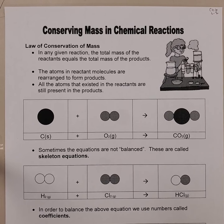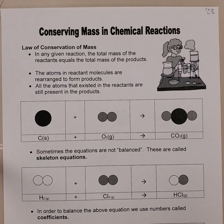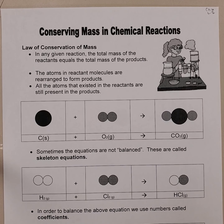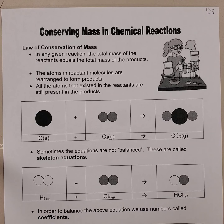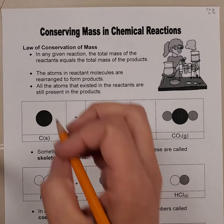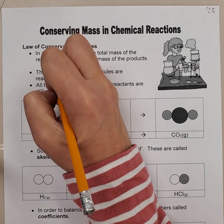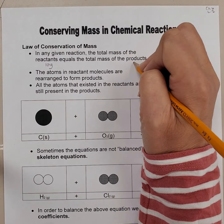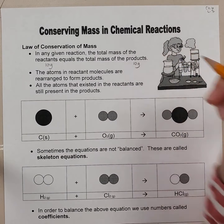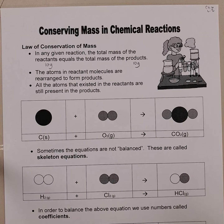The Law of Conservation of Mass states that in any given reaction, the total mass of the reactants equals the total mass of the products. So if you have a reactant and you weigh it — let's say your reactants weigh 10 grams — then when you weigh your products, they should also weigh 10 grams.